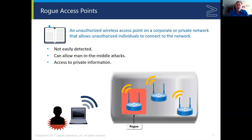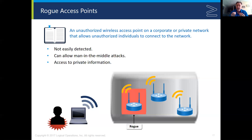Rogue access points can be quite dangerous because they allow unauthorized individuals to connect to the network and enable man-in-the-middle attacks. A man-in-the-middle attack is basically someone sitting in between you and the remote computer that your computer is talking to, monitoring that traffic. If an attacker is able to penetrate the physical security of your facility, something they might do is install a rogue access point.